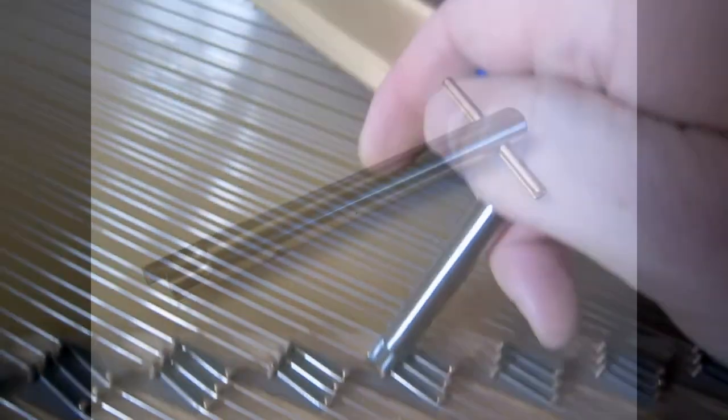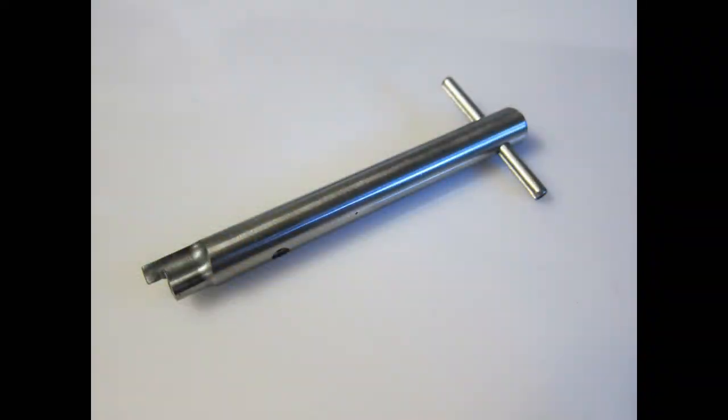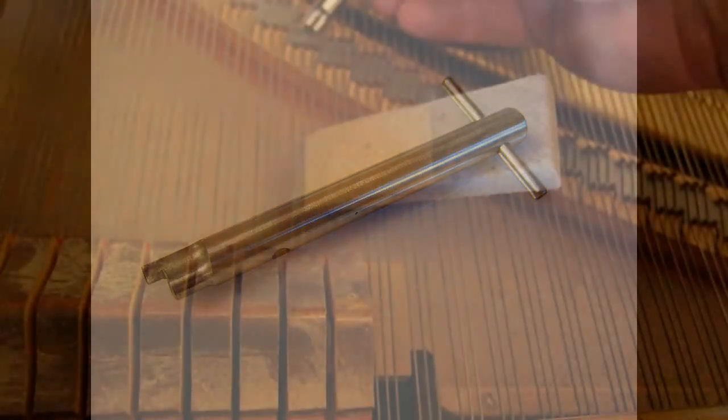Since this is a permanent change in the wire bend, the resulting reduction in false beats also lasts longer than string seating methods that simply push the wire down toward the bridge cap.